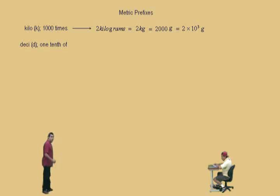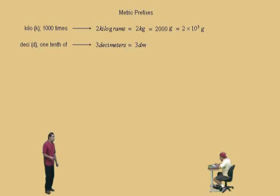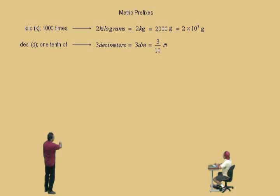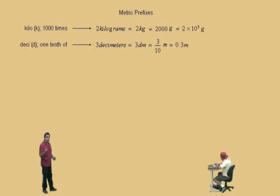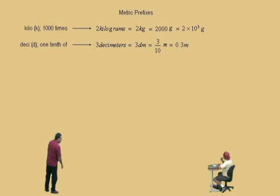Let's talk about deci. Deci, abbreviated with a d, means one-tenth of. If you have 3 decimeters, abbreviated 3 dm, then you have 3 tenths of a meter, because deci means one-tenth of. As a decimal, that's 0.3 meters — remember, 0.3 is 3 tenths. In scientific notation, that's 3 times 10 to the negative 1 meters.